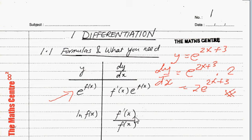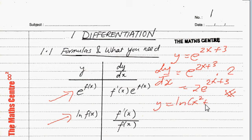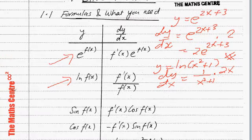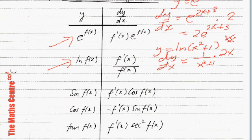Next, another very important formula: if y equals ln of f(x), or log of f(x) to base e, then dy/dx equals f'(x) over f(x). So let's say we have y equals ln of x squared plus 1. Then dy/dx equals 1 over x squared plus 1, and don't forget to multiply by the derivative of this, which is 2x. So you will get your answer as 2x over x squared plus 1. When you differentiate a logarithmic function, you get 1 over the function times the derivative of that function.